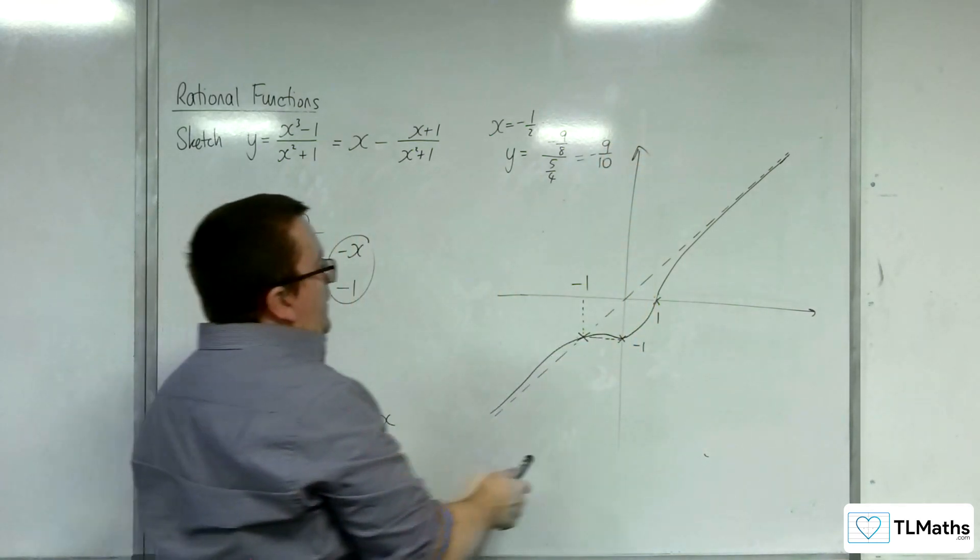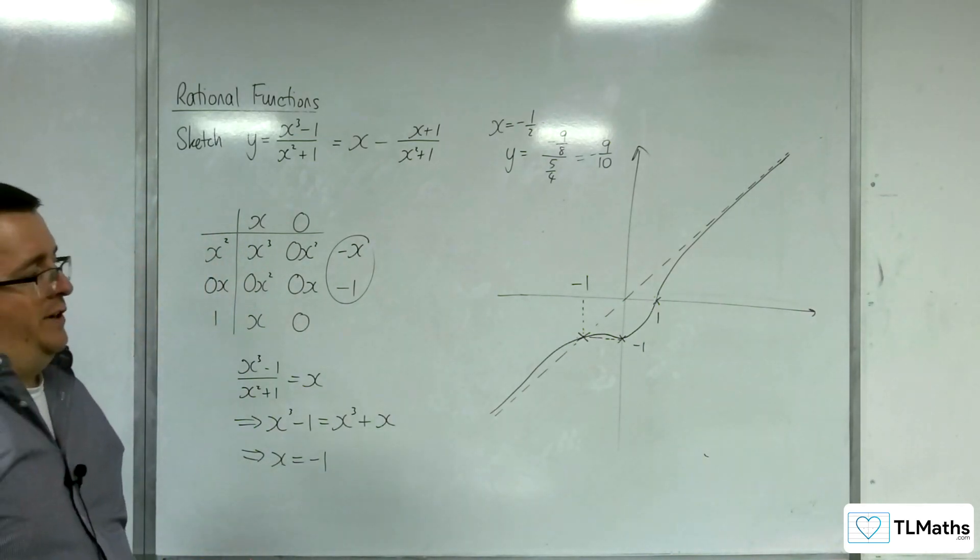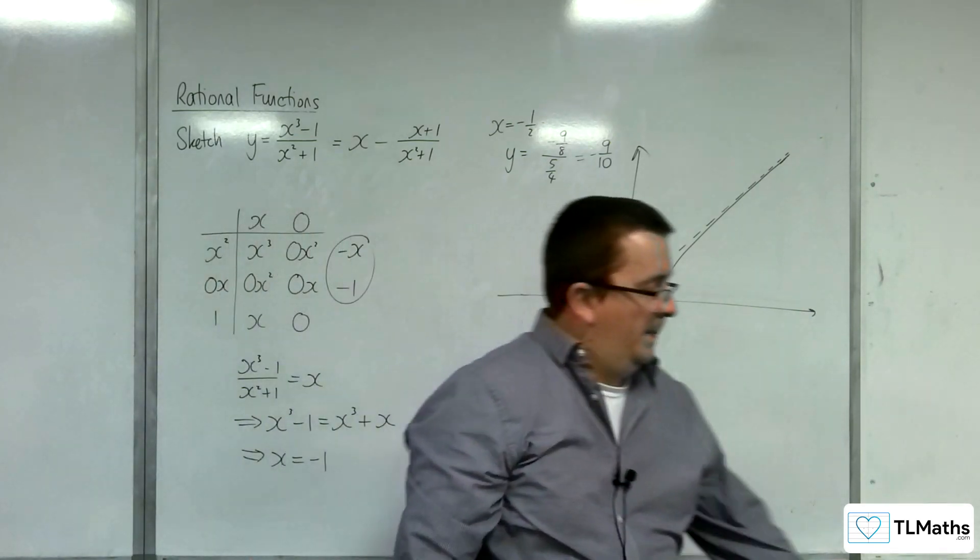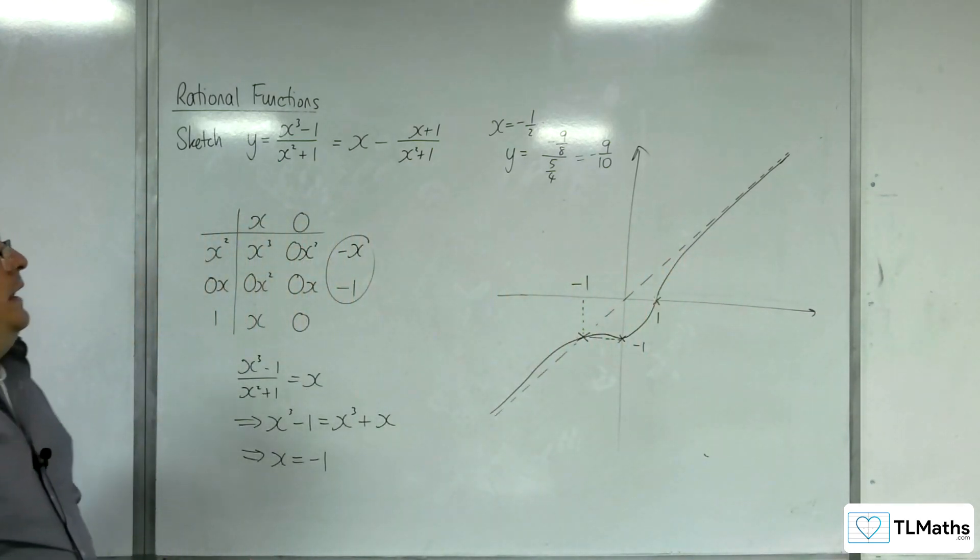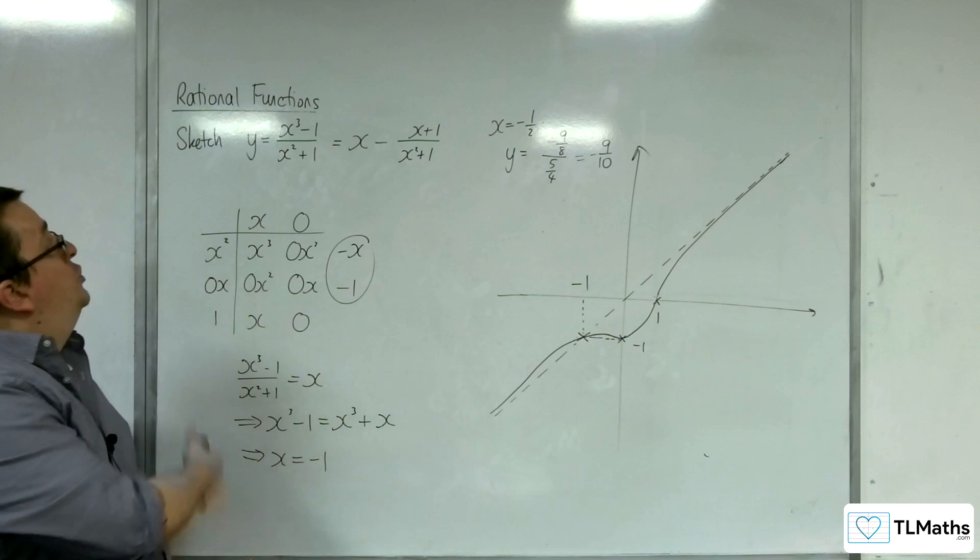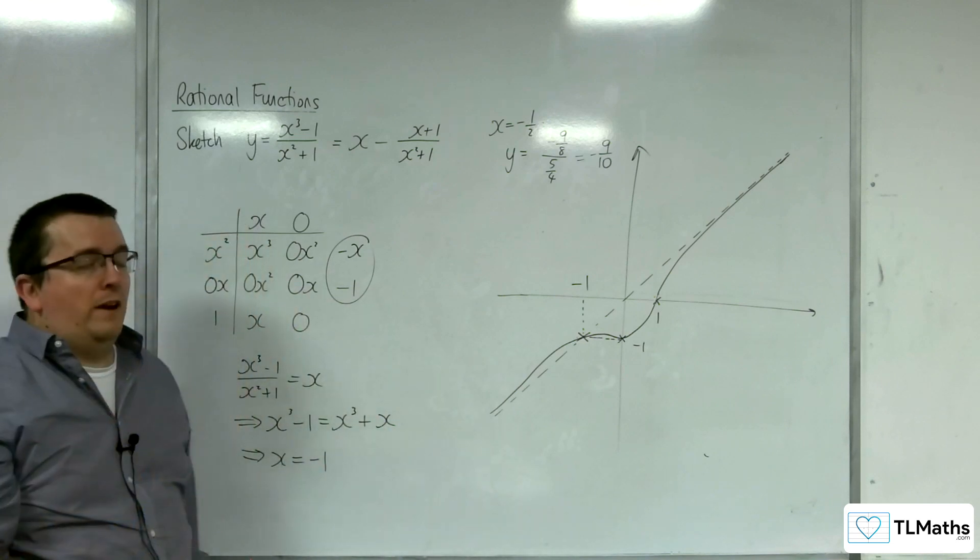So, minus 9 tenths means it's above that dotted line. So, it must look the way that I've drawn it. And so, that is how we can sketch this strange-looking y equals x cubed, take away 1, over x squared, plus 1.